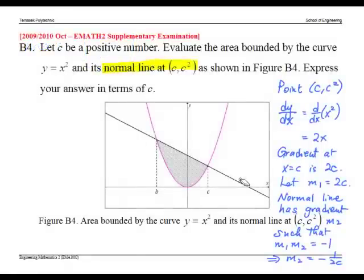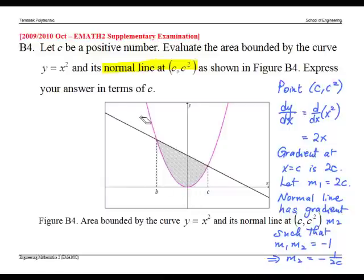Now we are ready to find the integral to give the area. The integral goes from b, which is minus 1 over 2c minus c, to c. And we take the top curve, which is the straight line, minus the bottom curve, which is y equals x squared.